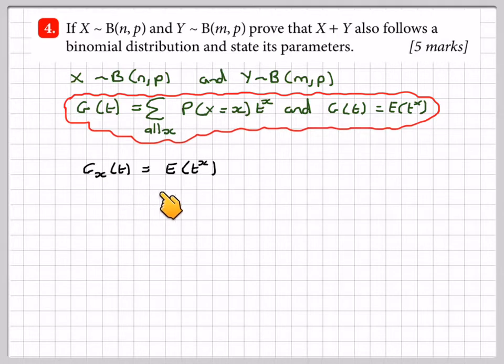So G_x of t equals E of t to the x, which is the sum from k equals 0 to n of n choose k, p to the x times 1 minus p (call this q) to the n minus k, times t to the x.